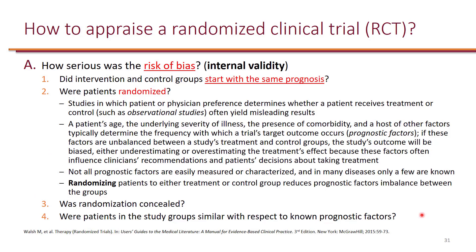In order to minimize the risk of bias, we want to make sure that the groups we are comparing have the same prognosis — at the beginning of the study, during the study, and after the completion of the study. The first question to ask is: did intervention and control groups start with the same prognosis? The next three questions are more specific in order to answer that general question.